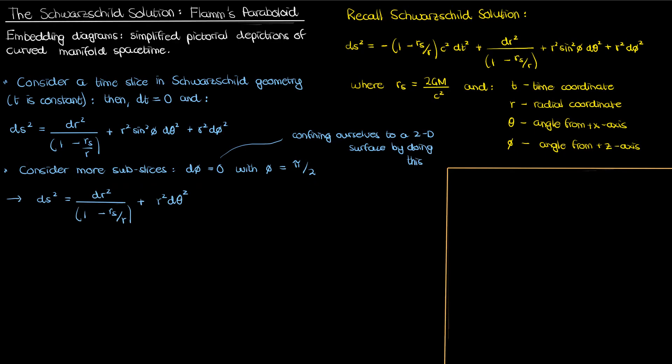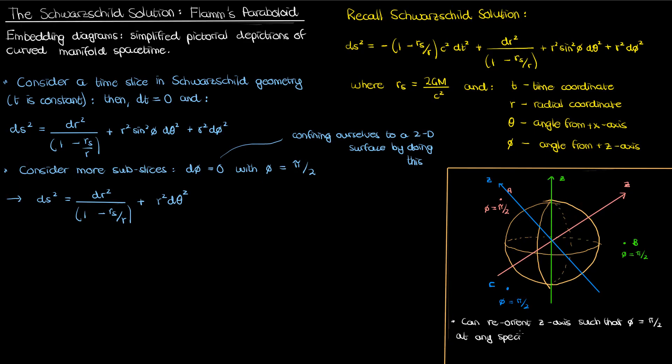As an aside, the reason we can just arbitrarily set our phi to pi by 2 is if we draw out our scenario with the non-rotating spherical mass in the center of our spacetime, then no matter what point I look at outside the sphere I can always reorient my z-axis such that my point, be it a, b, c, or wherever, my point always corresponds to phi equals pi by 2. So that's why I've set my phi to pi by 2 a priori because it simplifies the expression for ds squared and I can do this without really any loss of generality.